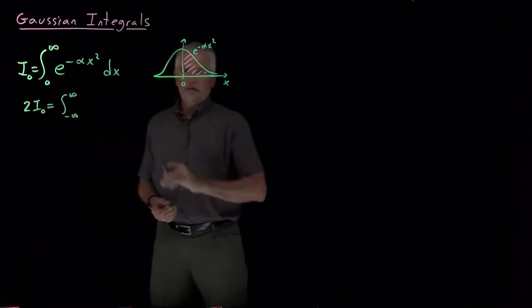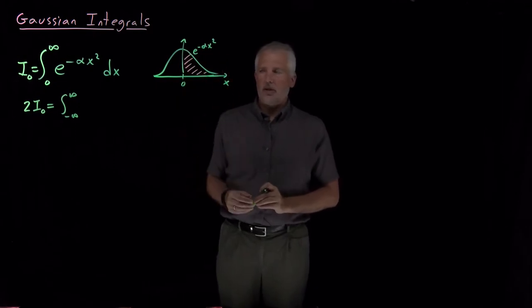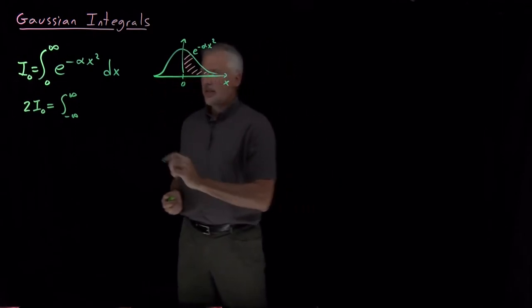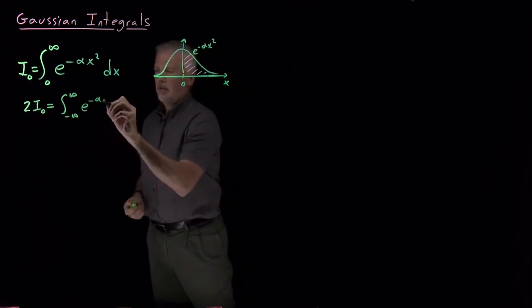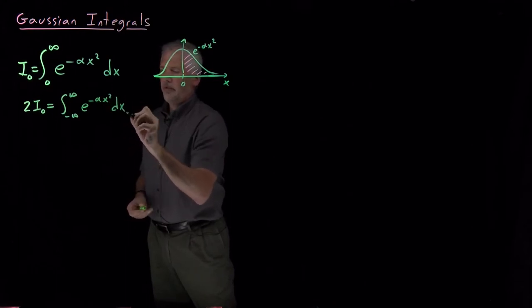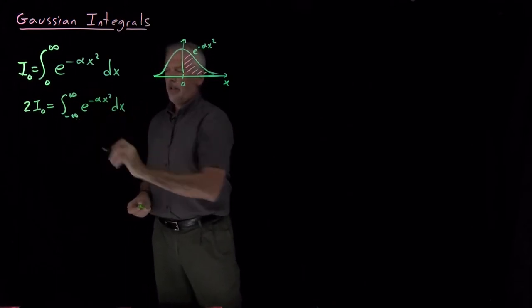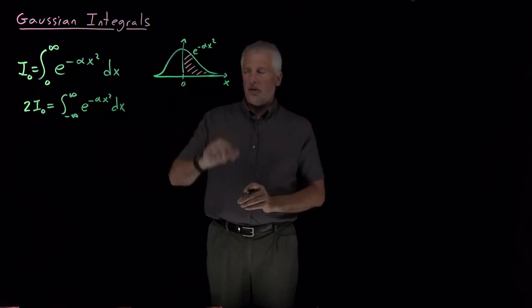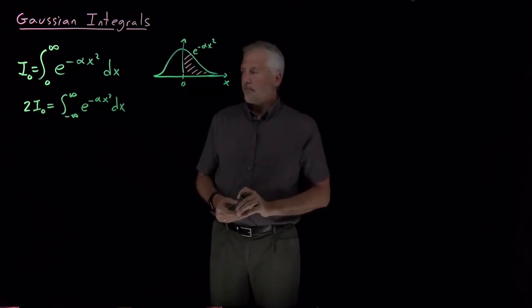Because this Gaussian function is symmetric, if I want to know the area under the entire curve, that's the integral of the Gaussian from negative infinity to infinity, and that's exactly twice the area under the right side of the curve.